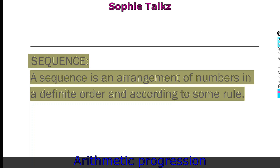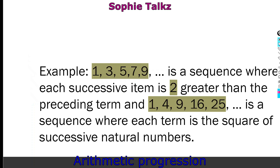A sequence is an arrangement of numbers in a definite order and according to some rule. For example, 1, 3, 5, 7, 9 is a sequence where each successive item is 2 greater than the preceding term.